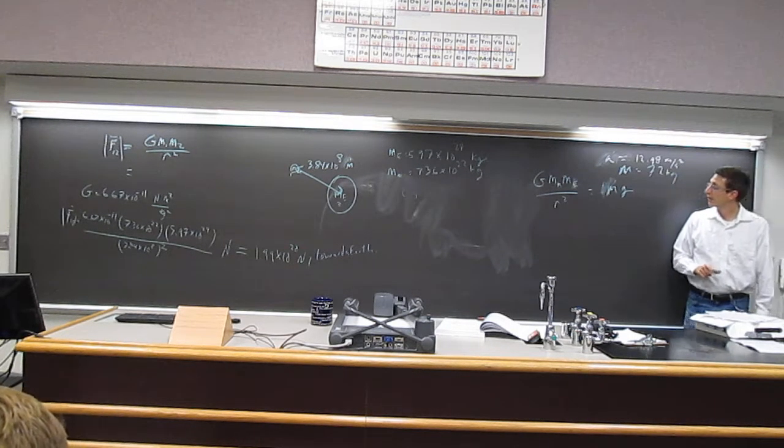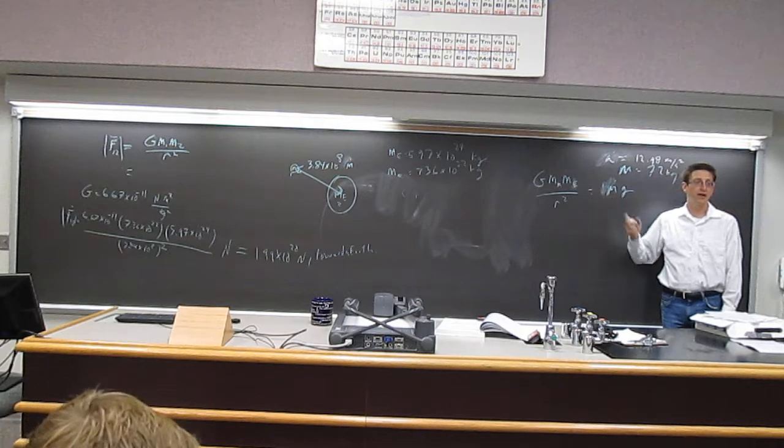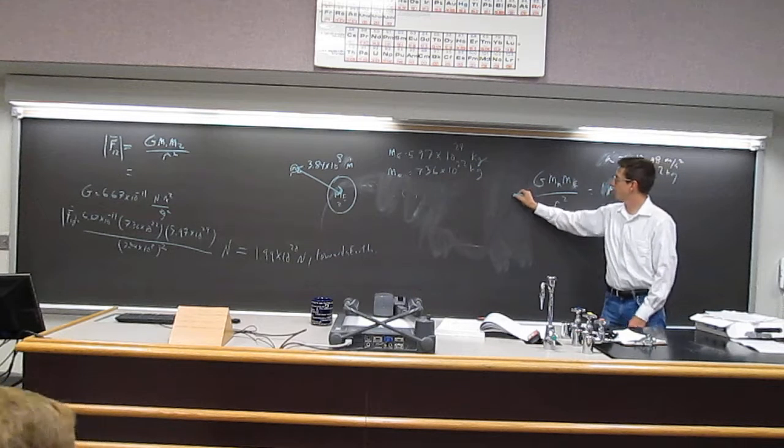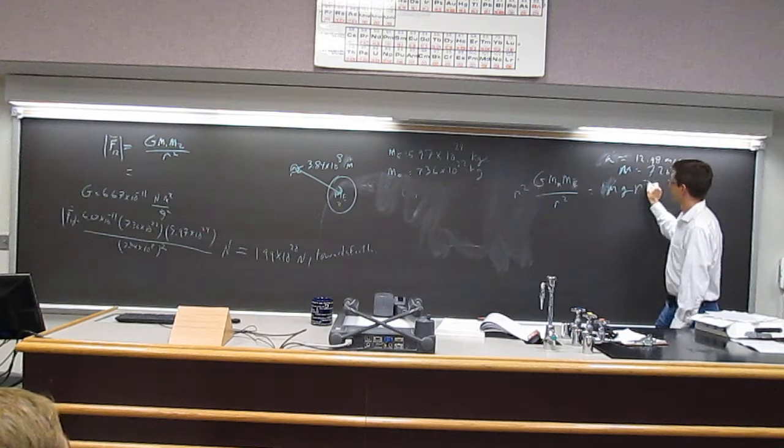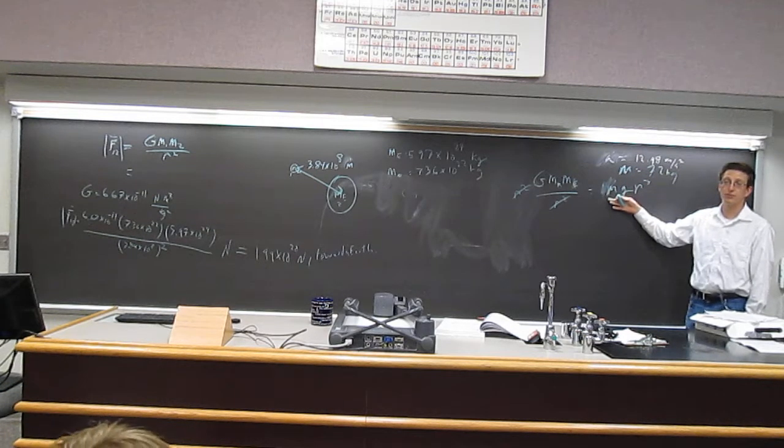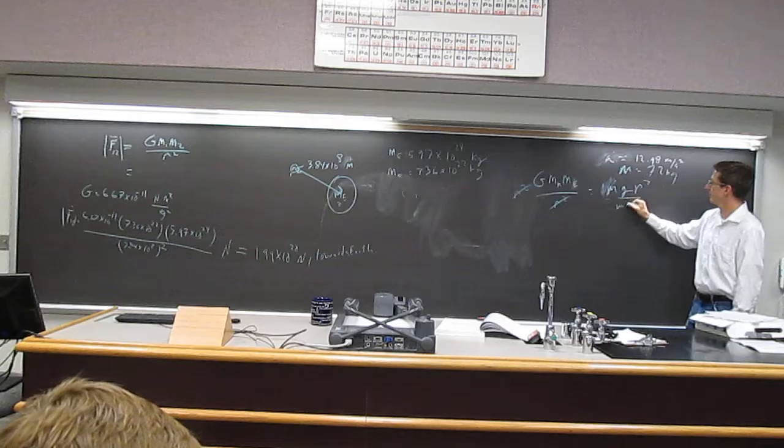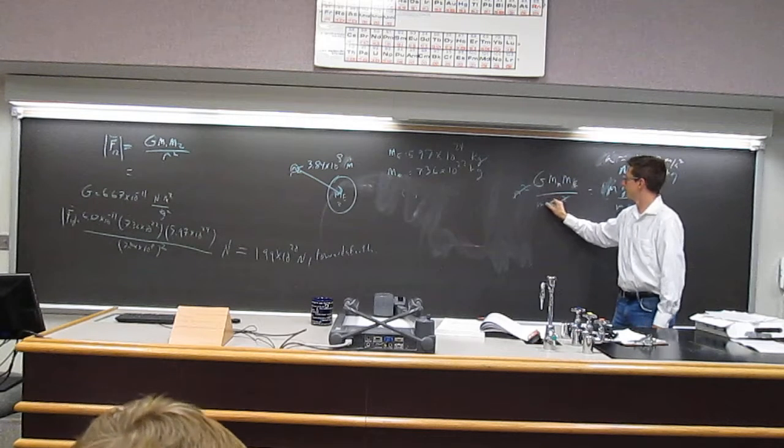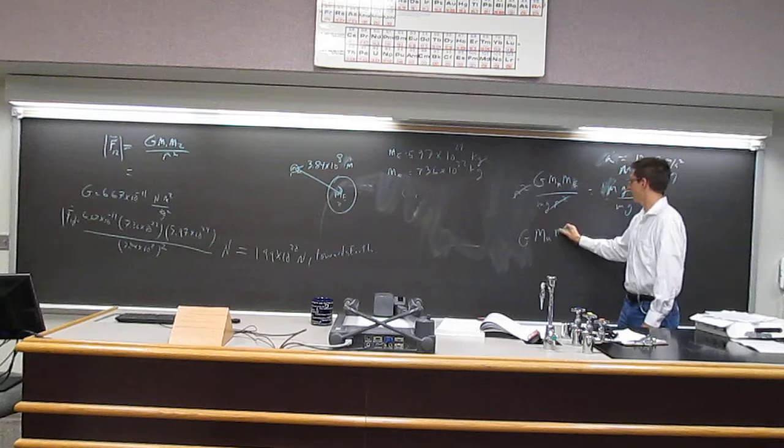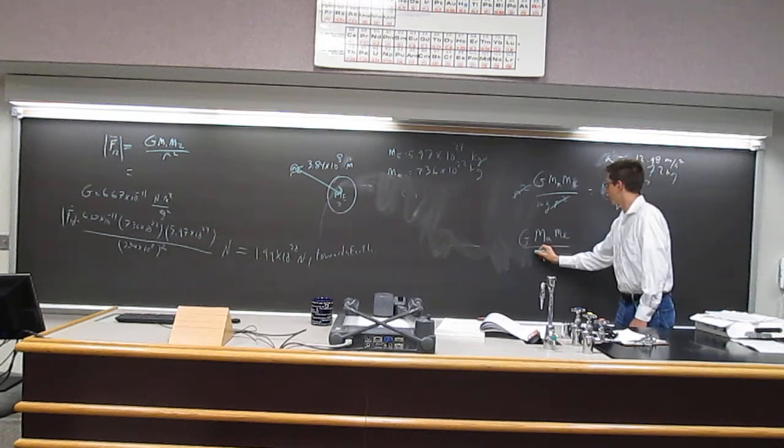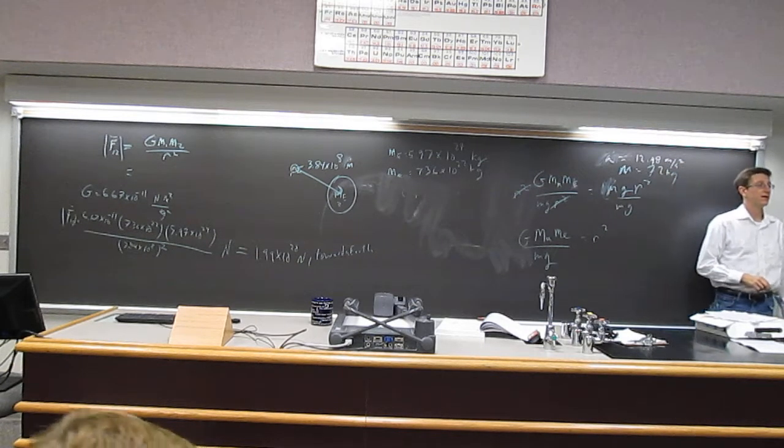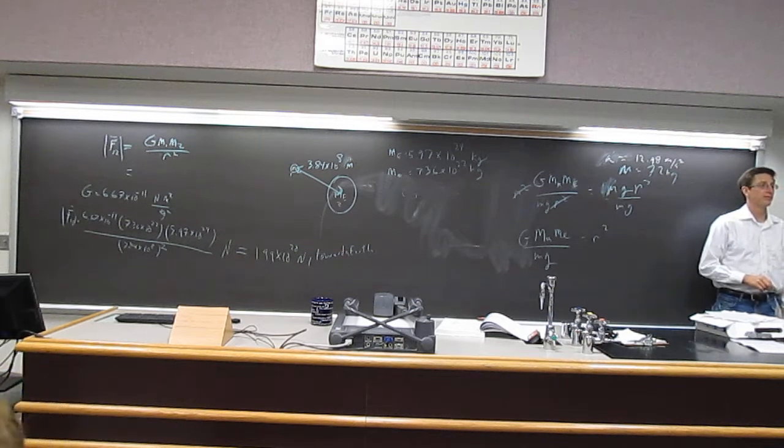So I got to solve for that r. So I'm going to multiply both sides of this equation by r squared. Cancel G's. Then I'm going to divide through by mg. So I would get G, mass of the moon, mass of the earth, over mg is r squared. Then I got to take square root.